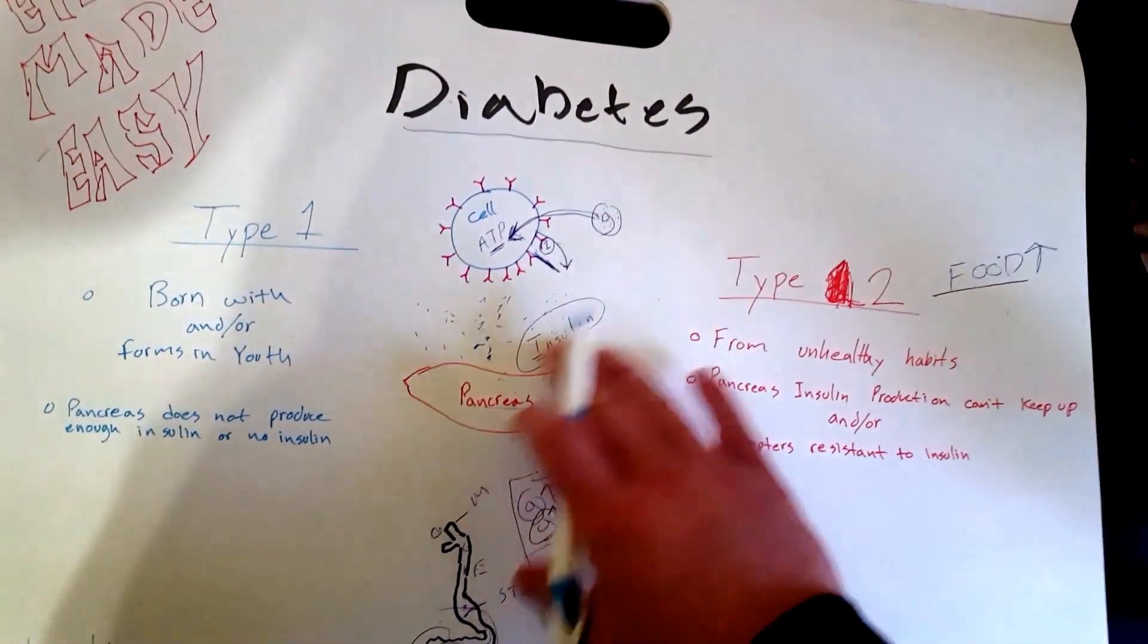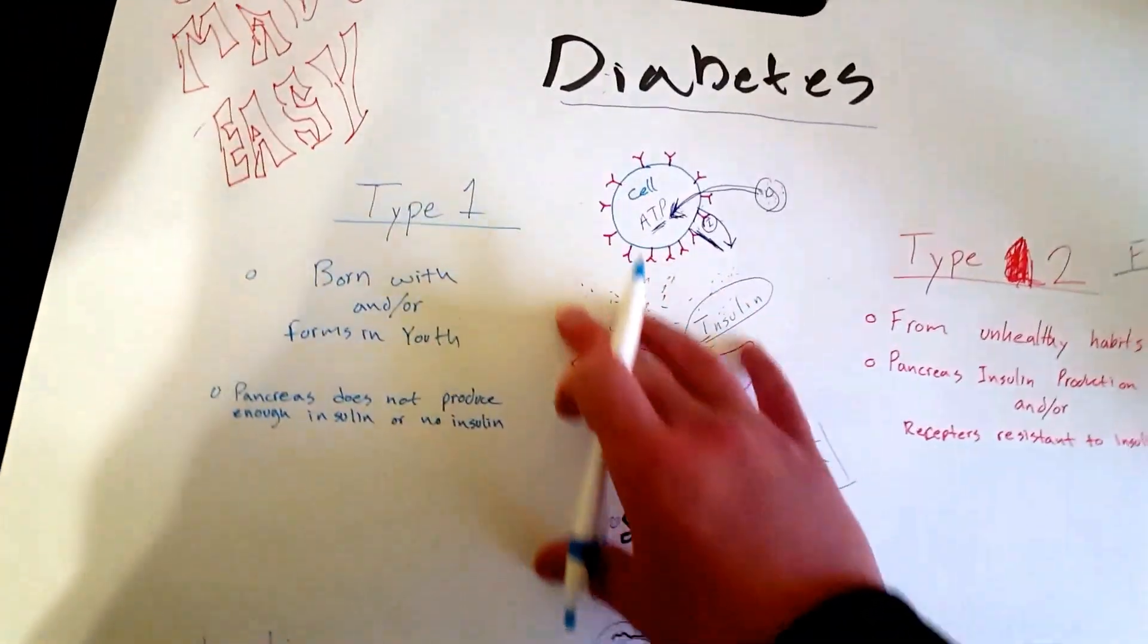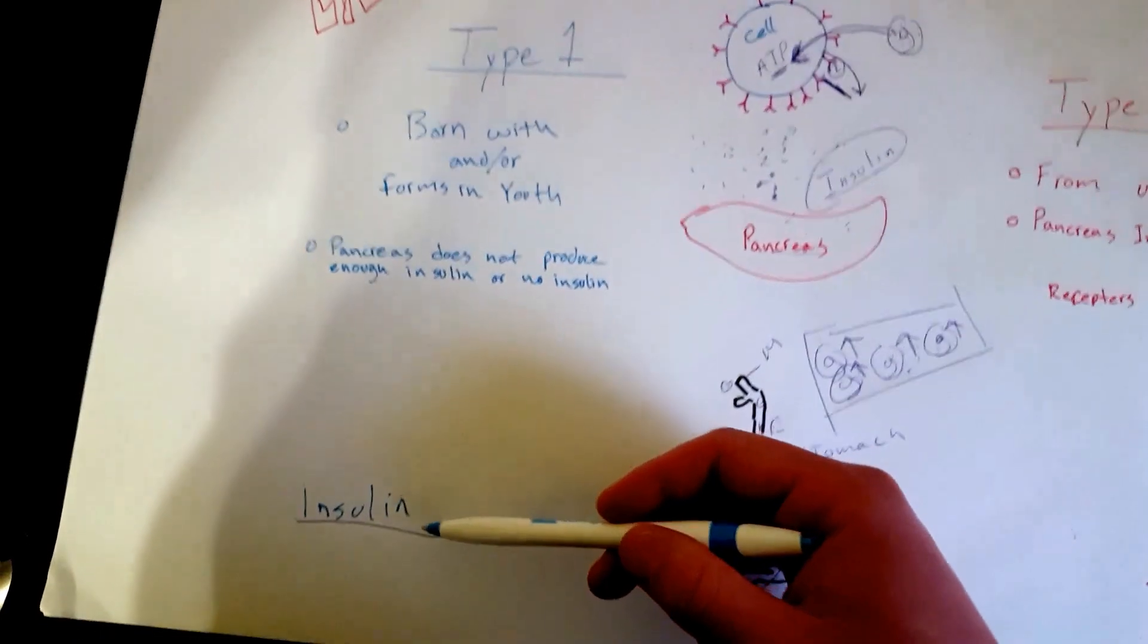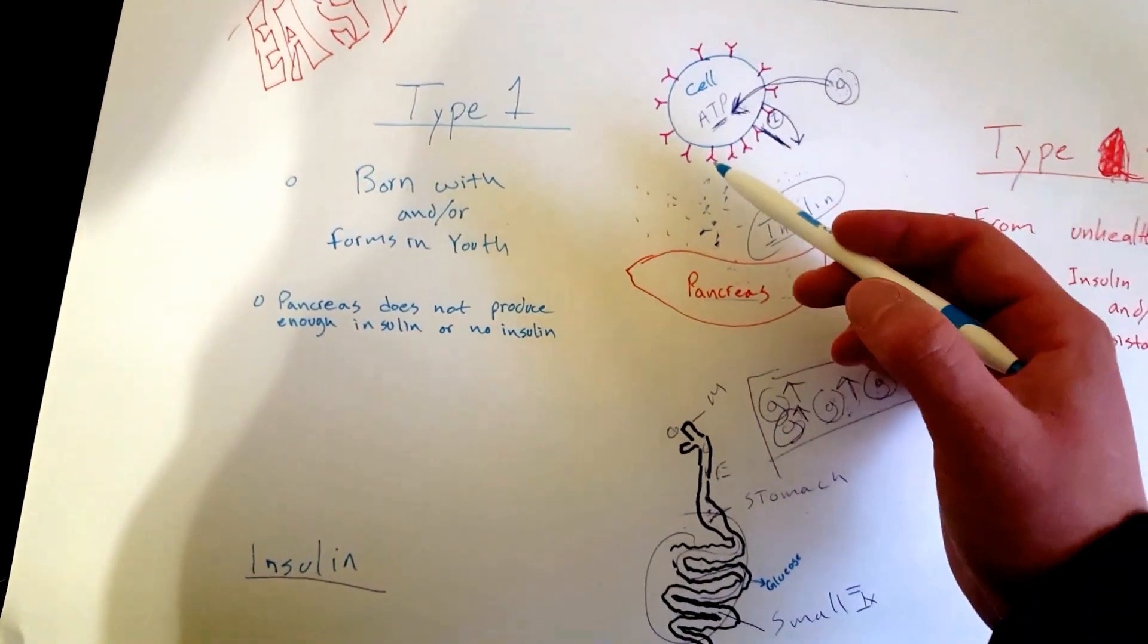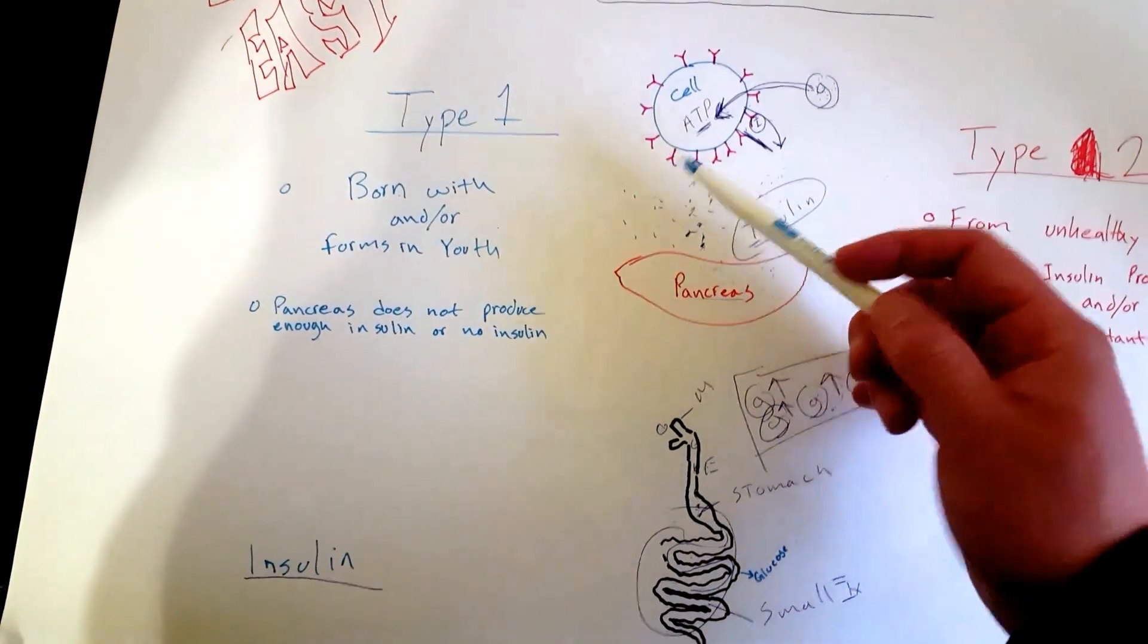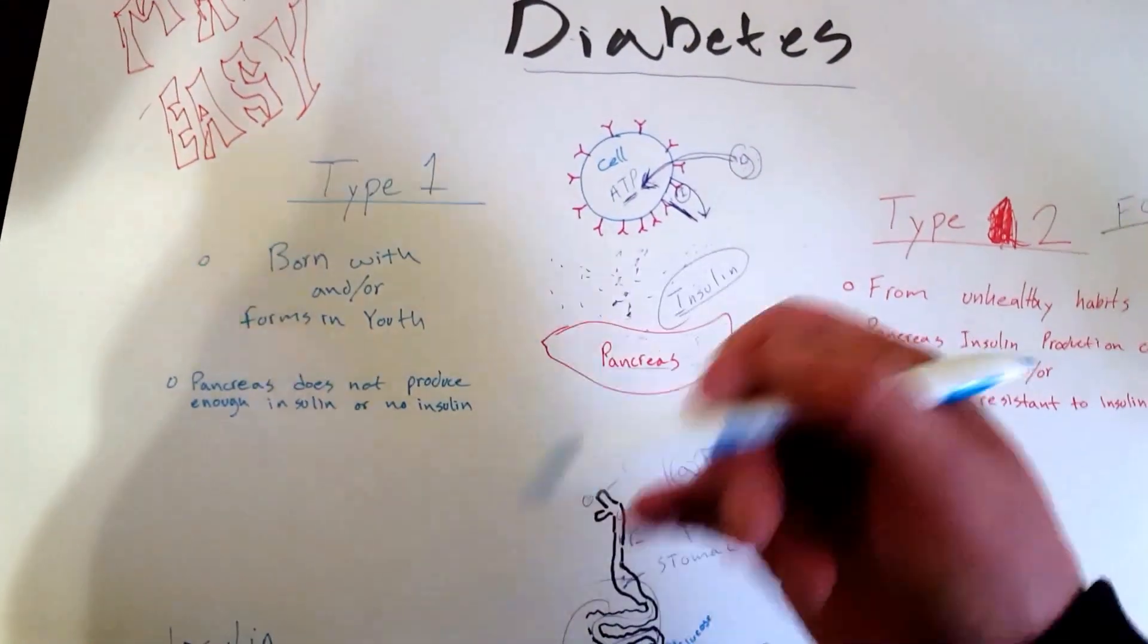That's why insulin is so important. Type 1 diabetics are insulin dependent, which means they have to take insulin to live a normal life and have glucose get into the cell to create energy and keep them alive.